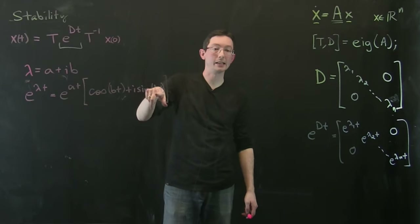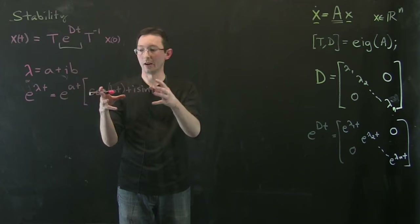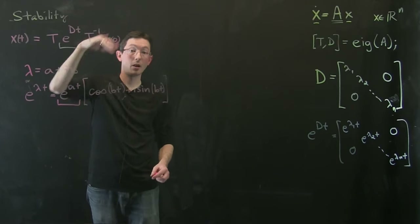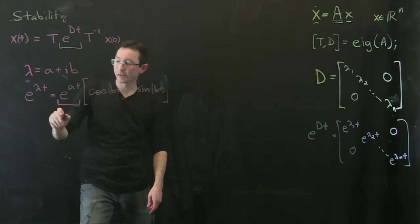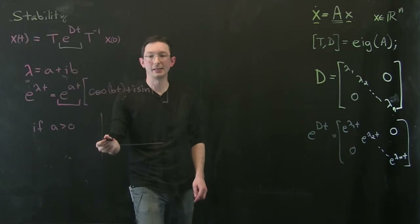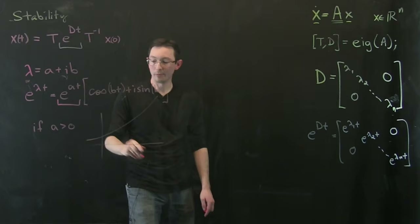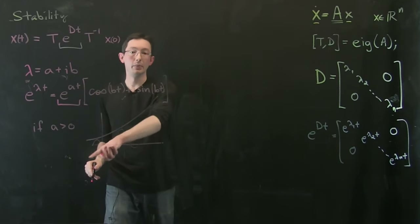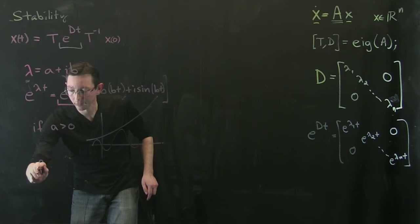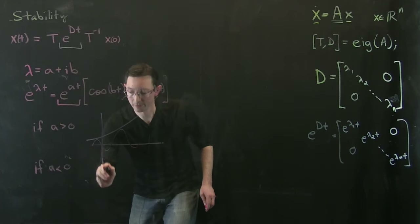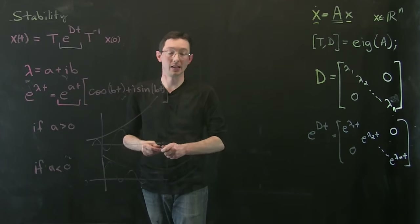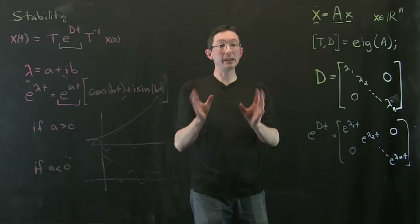Notice that cosine(bt) + i·sine(bt) never has an amplitude larger than one — it's always equal to one. So e^(at) is the term that tells us whether the solution is growing or decaying in time. If a > 0, we get an exponentially growing envelope — maybe the system oscillates sinusoidally, but in an exponentially growing envelope — and it'll eventually blow up. If a < 0, we get an exponentially decaying envelope, and the system decays to zero as t→∞.